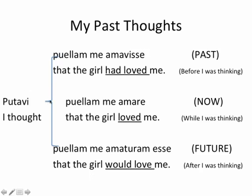If you're thinking in the past, things change a little bit, but only really in the translation of these sentences, not in the idea. I thought — so the thinking happened in the past — I thought that the girl had loved me, because it was happening before you were thinking it. In English, you use the word 'had' to show that it happened further back in the past than another past action. Even though you're using the present infinitive, in English we say 'loved' because the loving happened in the past when you were thinking it. So we say I thought that the girl loved me.